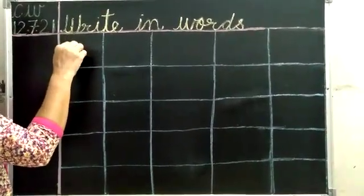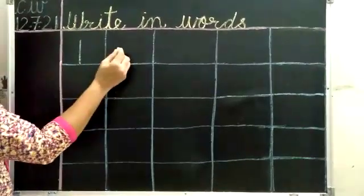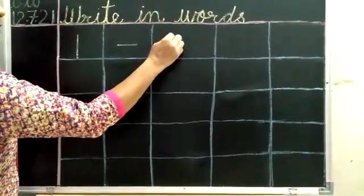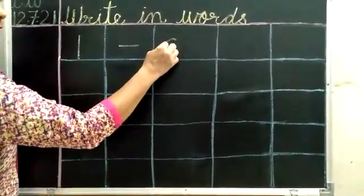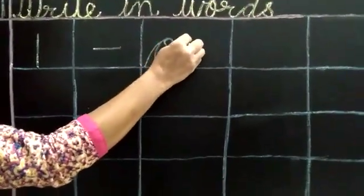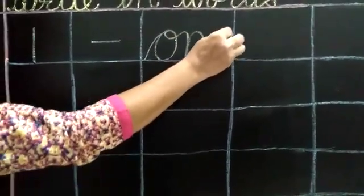In the first line, children, we'll write 1. Then we'll write the spelling of 1. It's O, N, E.